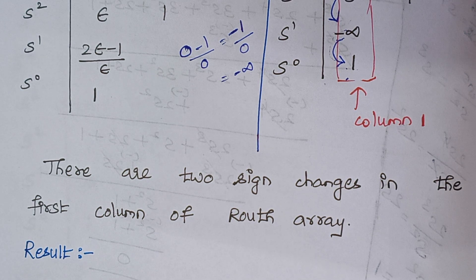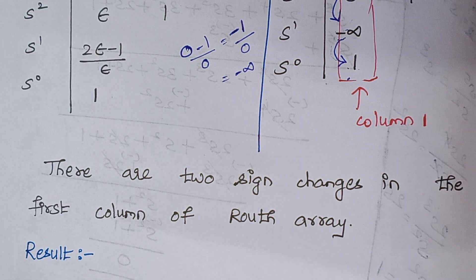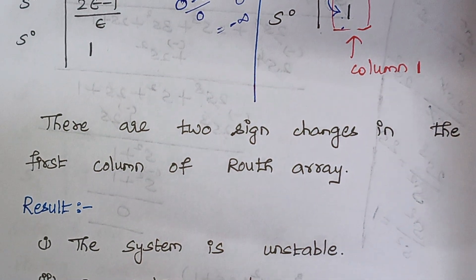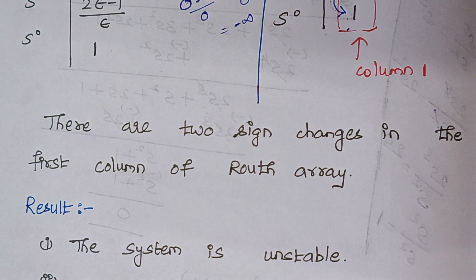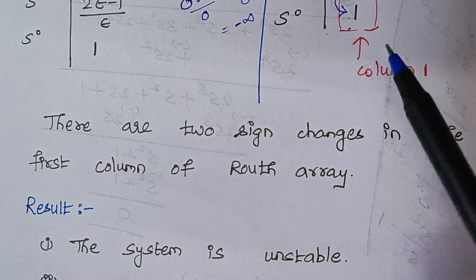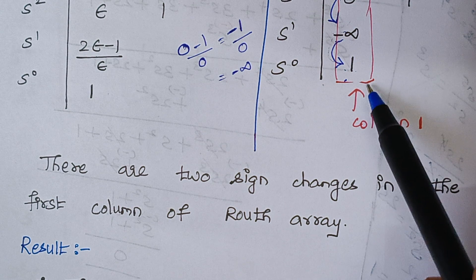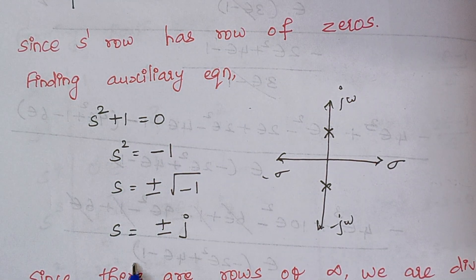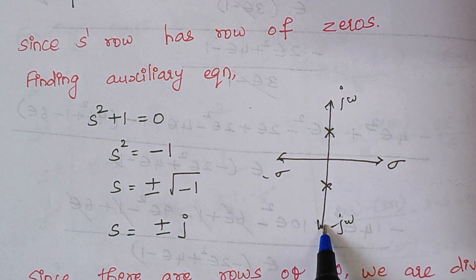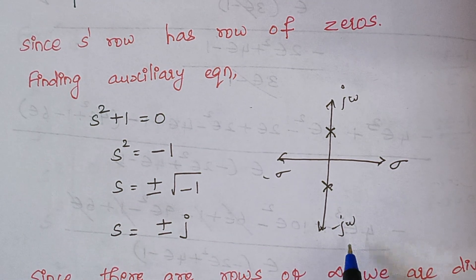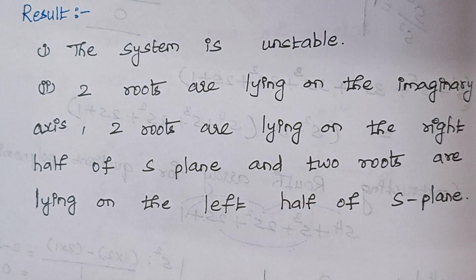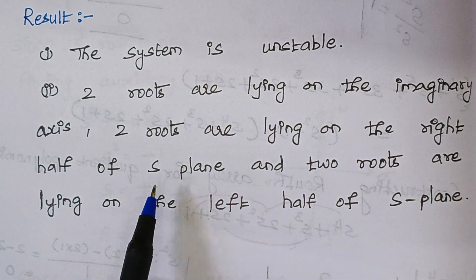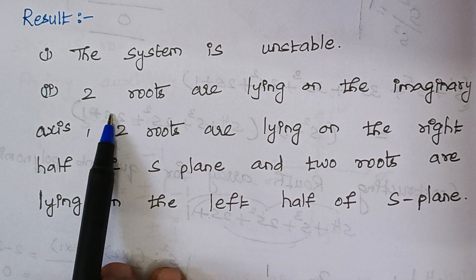Can you tell me whether the system is stable or unstable? Whenever sign changes are present in the first column of the Routh array, the system is said to be unstable. Here we have two sign changes, so the system is unstable. Since we have two sign changes, two roots are lying on the right half of the S-plane. From the auxiliary equation, the location of the other two roots are found to be on the imaginary axis. So two roots are on the imaginary axis and two roots are on the right half of the S-plane.